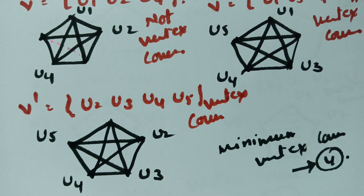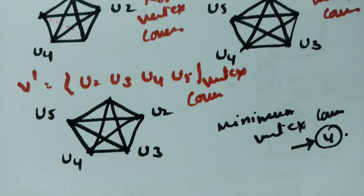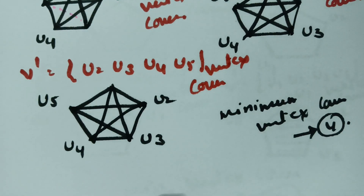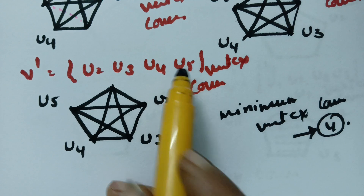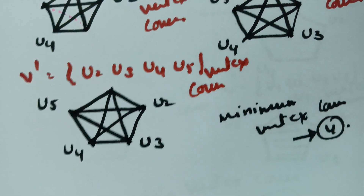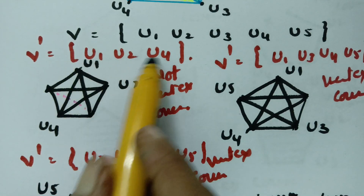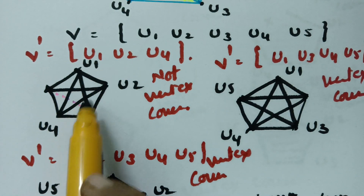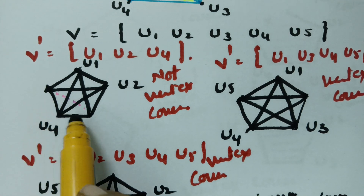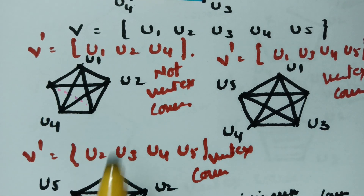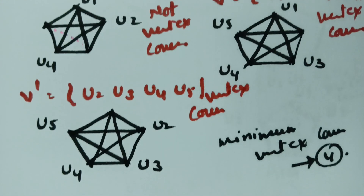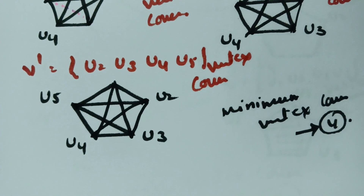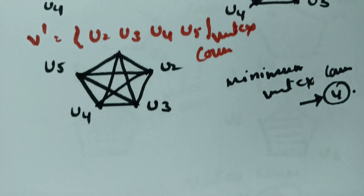With 4 vertices we are covering all the edges. With 3 vertices we could not cover this one edge. Therefore this is not a vertex cover, whereas with minimum 4 vertices we can cover all the edges from the graph.